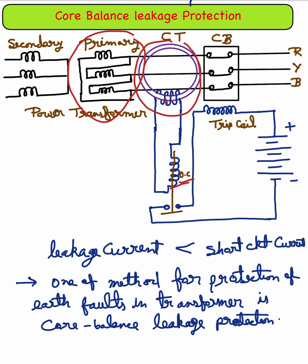There are two situations to consider: normal condition and fault condition. Under normal condition, when no earth fault occurs, the sum of the currents of the three phases R, Y, B is always zero, and there is no resultant flux in the core. No matter how much the load is out of balance, no current flows through the relay operating coil, and the trip circuit remains open.